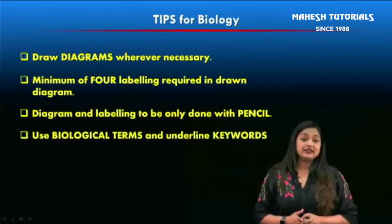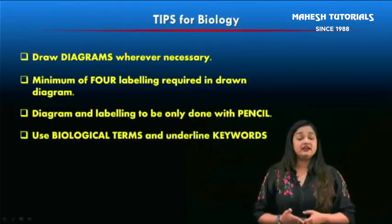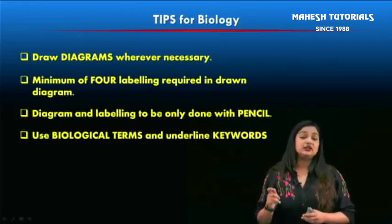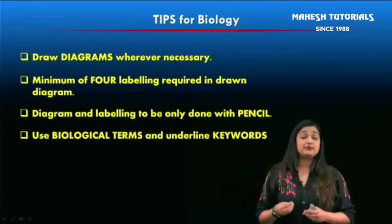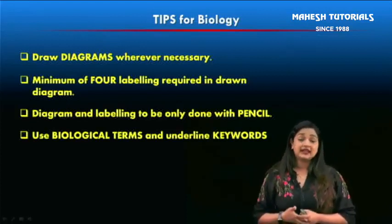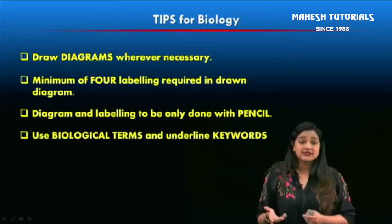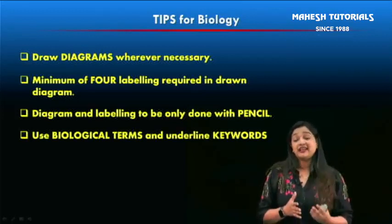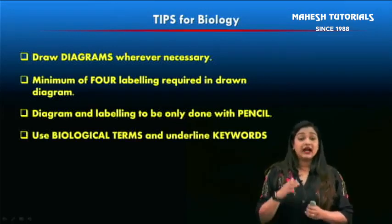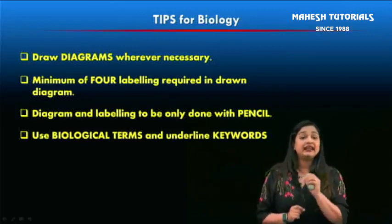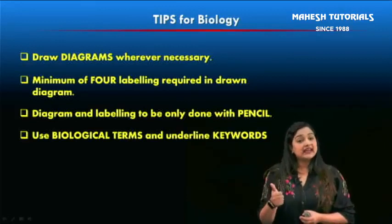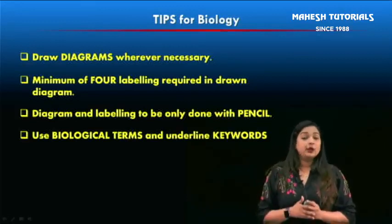Use biological terms and underline keywords. Do not write random or self-invented words. For example, blood clotting is scientifically called blood coagulation; RBCs, WBCs, and platelets are scientifically called erythrocytes, leukocytes, and thrombocytes respectively. Wherever a biological term applies, use it in your answers. Write answers point-wise and underline the keywords in every point — underlining keywords will be the highlighting feature of your answers.